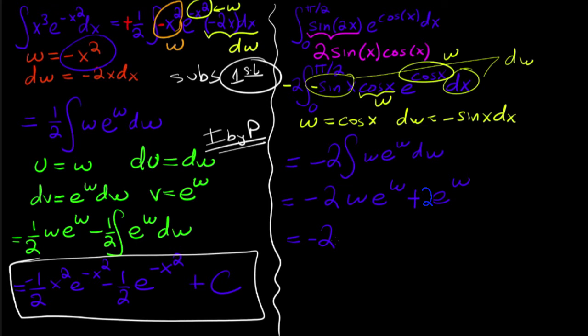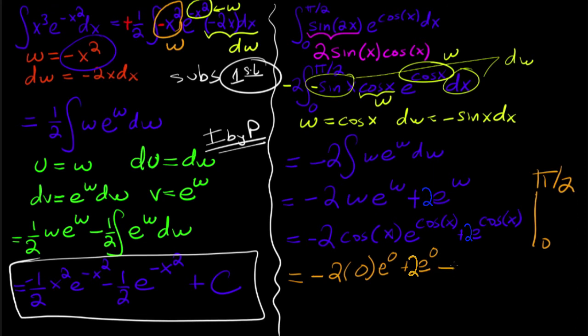So this is equal to negative 2, w is cosine of x, e to the cosine of x plus e to the cosine of x, and this is going to be evaluated from 0 to pi over 2. So this is negative 2, cosine of pi over 2 is 0, and e to the 0 plus e to the 0 again, minus negative 2 cosine of 0 is 1, e to the 1 plus e. So then here what I've got is this guy is 0, e to the 0 is equal to 1.